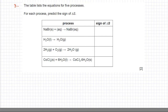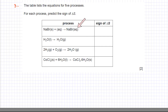Now we're going to do example number three. You just have to predict the sign of delta S — whether entropy is increasing or decreasing. The first process is that a solid substance is dissolving and forming aqueous ions. Whenever a solid dissolves and forms aqueous ions, disorder would be increasing, so delta S would be positive.